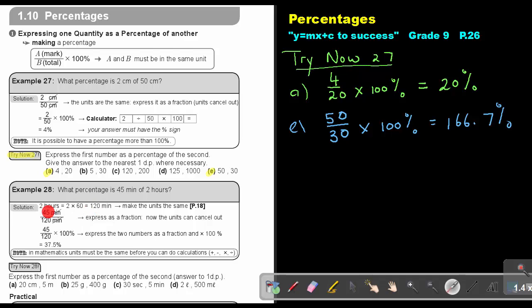So then it's the 45, divide the 120, and then I multiply 100% and I get 37.5%.